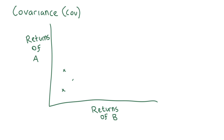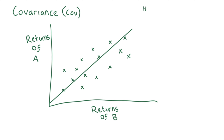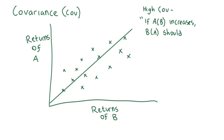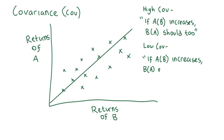Welcome back. Today we'll talk about an important paradigm to investing involving the optimization of a portfolio by maximizing return for a given level of risk. Let's begin by talking about an important paradigm on portfolio construction called covariance. Covariance is a measure to determine the directional relationship between the returns on two assets.